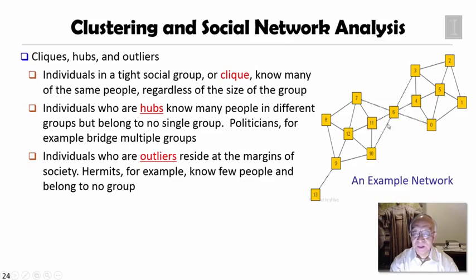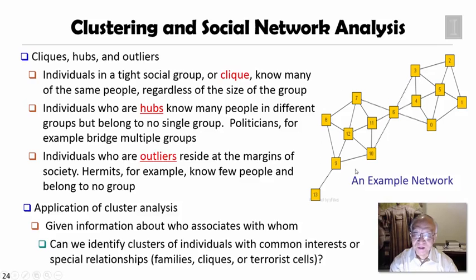Cliques are people who know each other, people who are tightly connected with each other. Hubs could be the people who are connected to many different groups, but they may not belong to a single group. Outliers may not belong to any clique but may have some few connections with some clusters or groups.